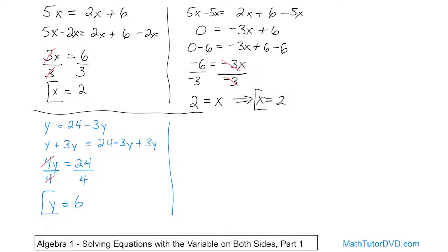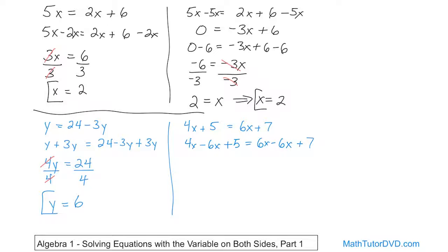What if we have 4x plus 5 equals 6x plus 7? I have 4x over here and 6x over here. I can do whatever I want — move the 4x over there or move the 6x over here. Let's move the 6x to the left by subtracting 6x from both sides. On the right, 6x minus 6x disappears. On the left, 4x minus 6x: that's 4 minus 6, which gives negative 2x, because 6 minus 4 is 2 and the sign goes with the larger absolute value. So you have negative 2x plus 5 on the left, and 7 on the right.